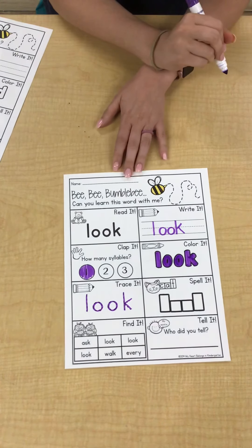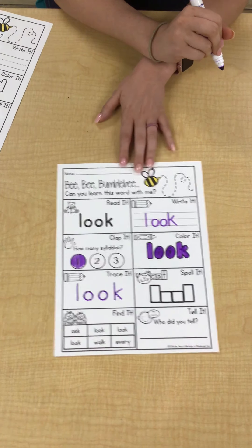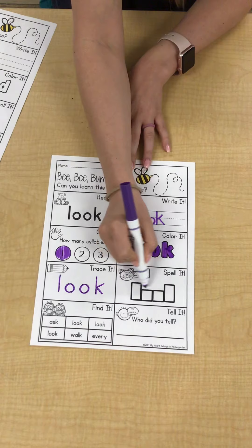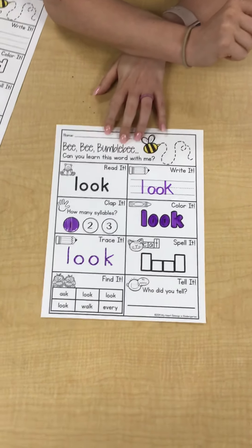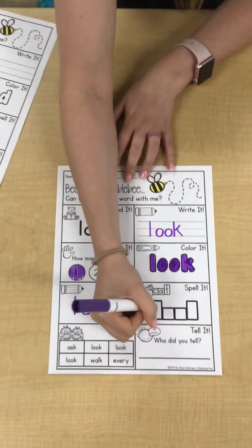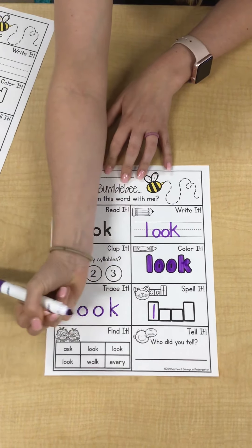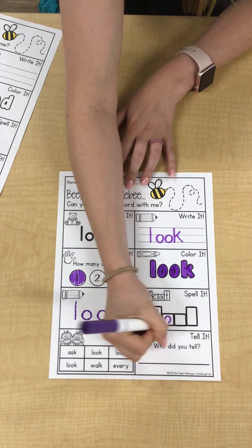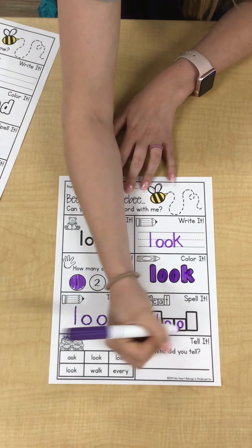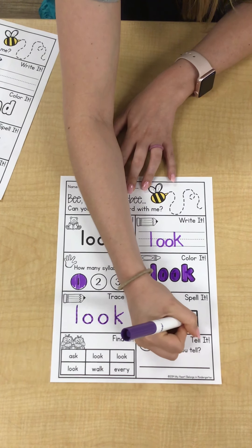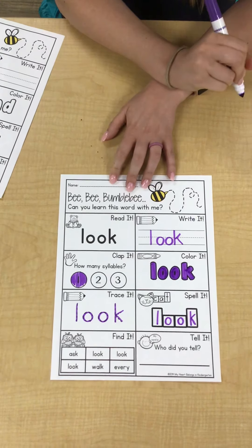We're going to go down to the next one. It says, how many syllables? We're going to clap it. When you clap look—look—how many syllables is the word look? We clapped once. Look. We're going to color in the number one because we only clapped one time.